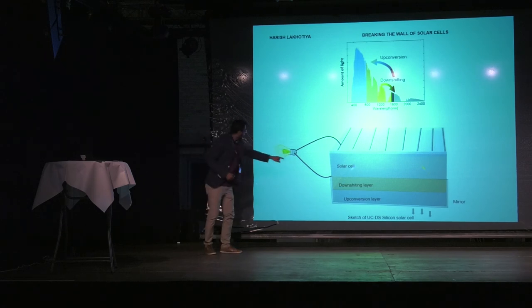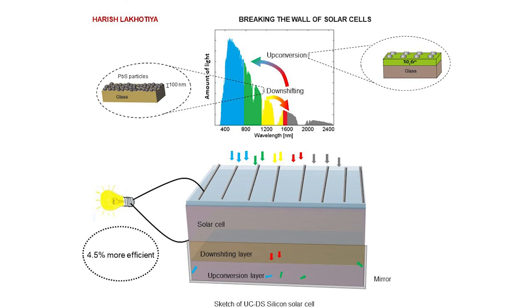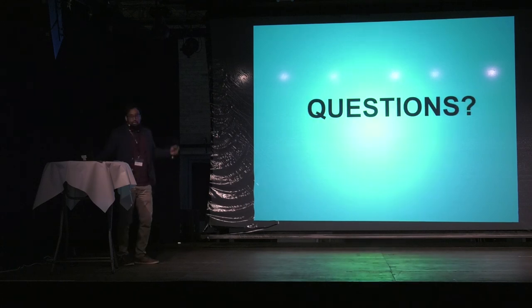And now these are the photons which make this light more brighter. So our aim is to make it 4.5% more efficient than the current solar cell. And that's all. Thank you.